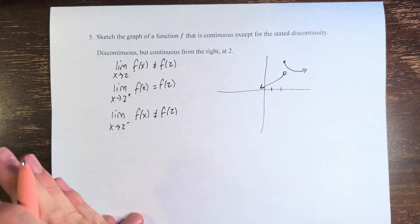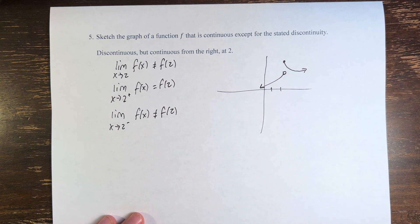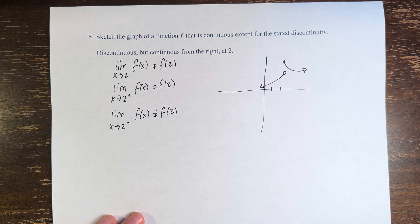And then the function can do whatever it wants outside of that discontinuity at 2. So this is the graph of the function f with this particular discontinuity.